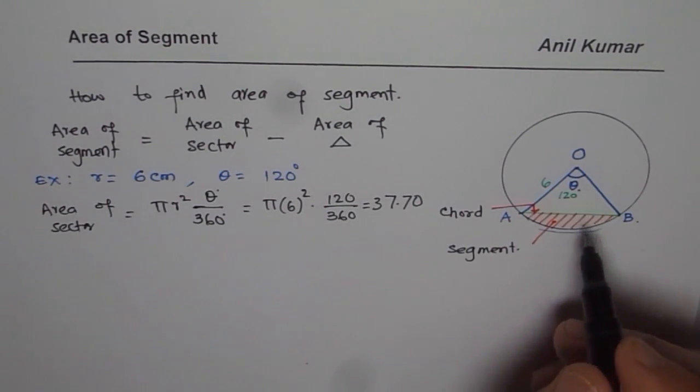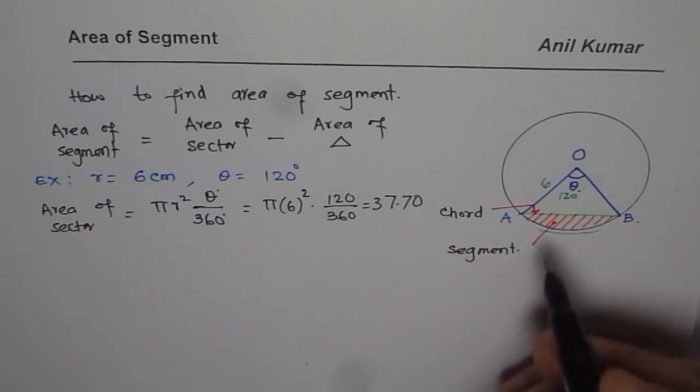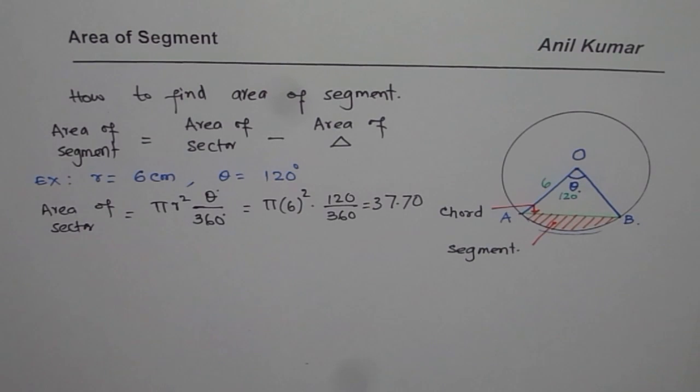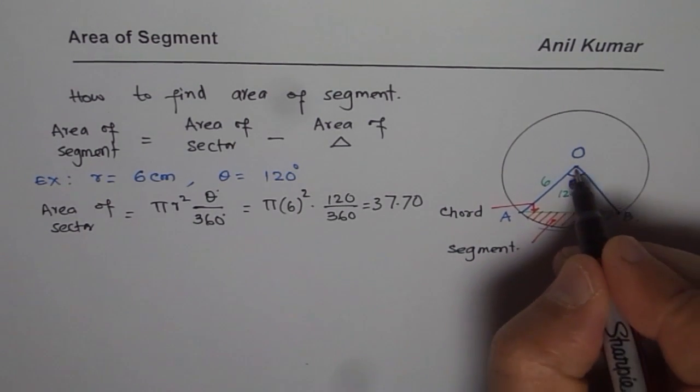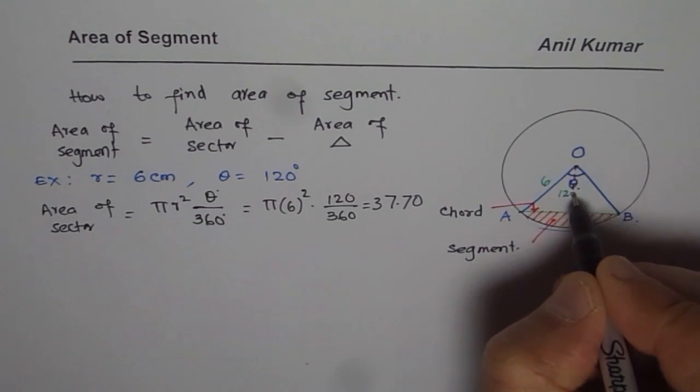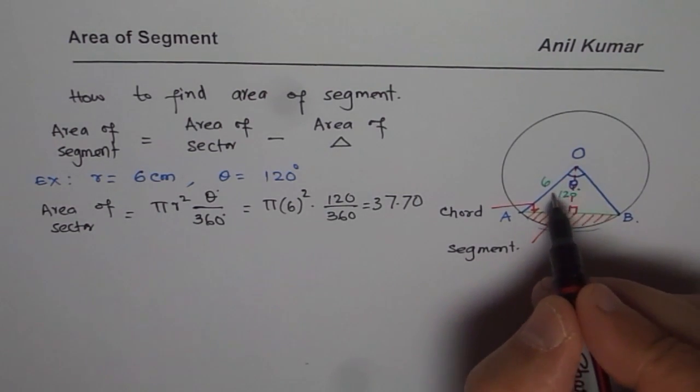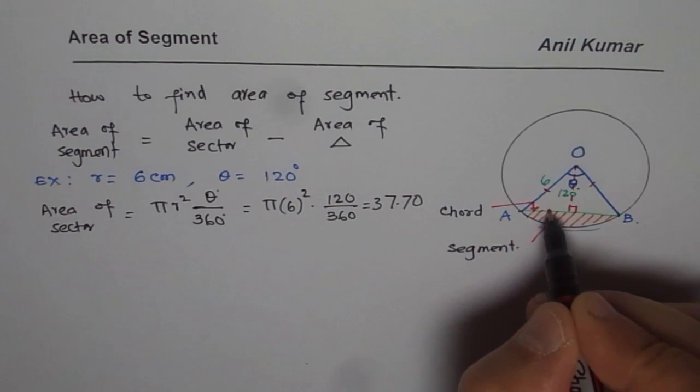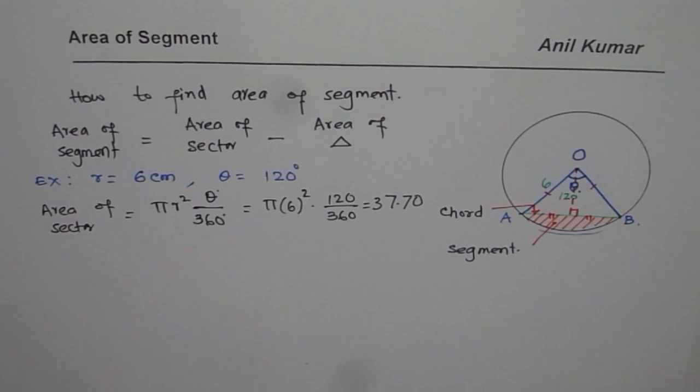Now from this area, I have to take away area of triangle. How to find area of triangle? That is a big question. To find area of triangle, we may use a bit of trigonometry. So what we need to do here is drop a perpendicular. So if I drop a perpendicular, then since these two sides are equal, these two sides will also be equal. So let me say, from O, I have a point P here.